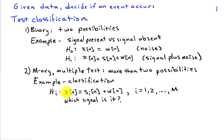For example, we can transmit, say, eight bits at a time, but then we have to decide which of two-to-the-eight waveforms were transmitted.